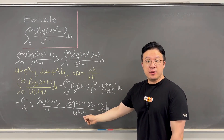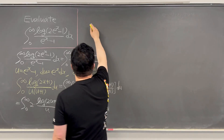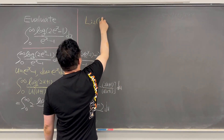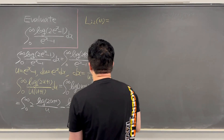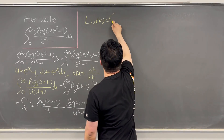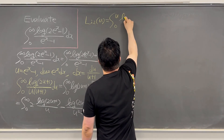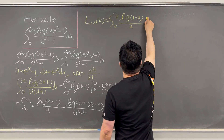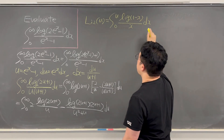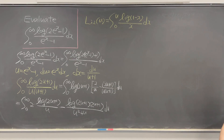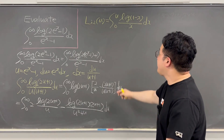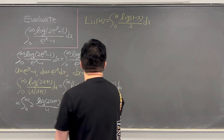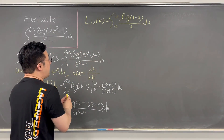Okay, this is the point where we can use the dilogarithm, which is Li₂. So Li₂(u) is defined as the integral from zero to u of log(1 - x) / x dx. That's the dilogarithm. This is going to be well defined when u is negative. Using this, we can keep working the expression out.